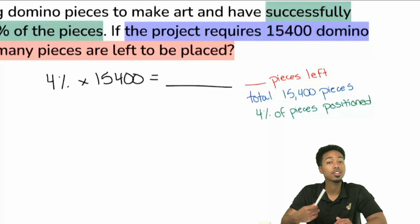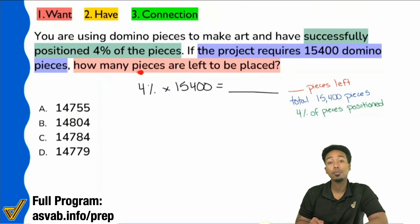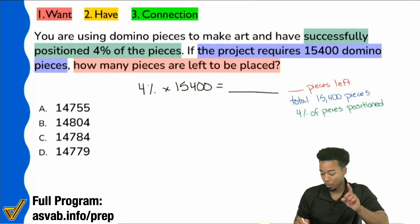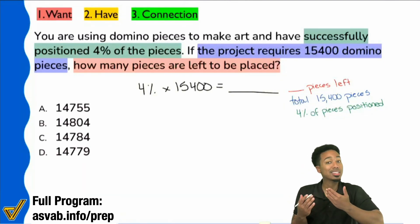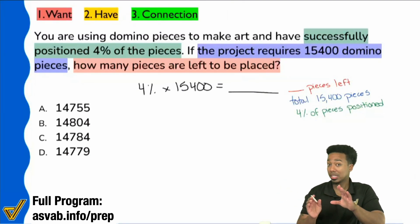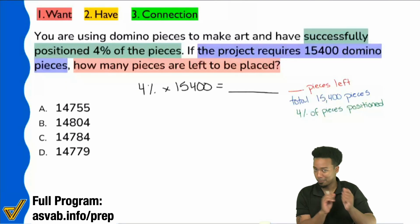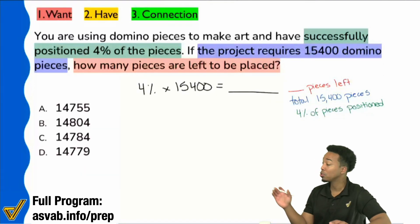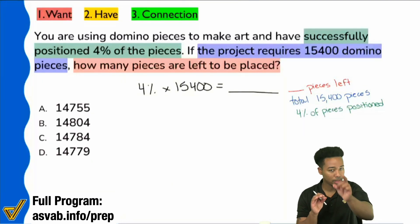No, because we're looking for the number of pieces left. We said it — how many pieces are left? If the 4% represents the number of pieces we've put down, that's not the same as how many pieces we have left. So there's something amiss here. And if you were to go ahead and solve this, I'm not saying you're automatically wrong — what I'm saying is you're not done. There's a difference. Just because you apply the 4% doesn't mean you're wrong; it just means you're not done.